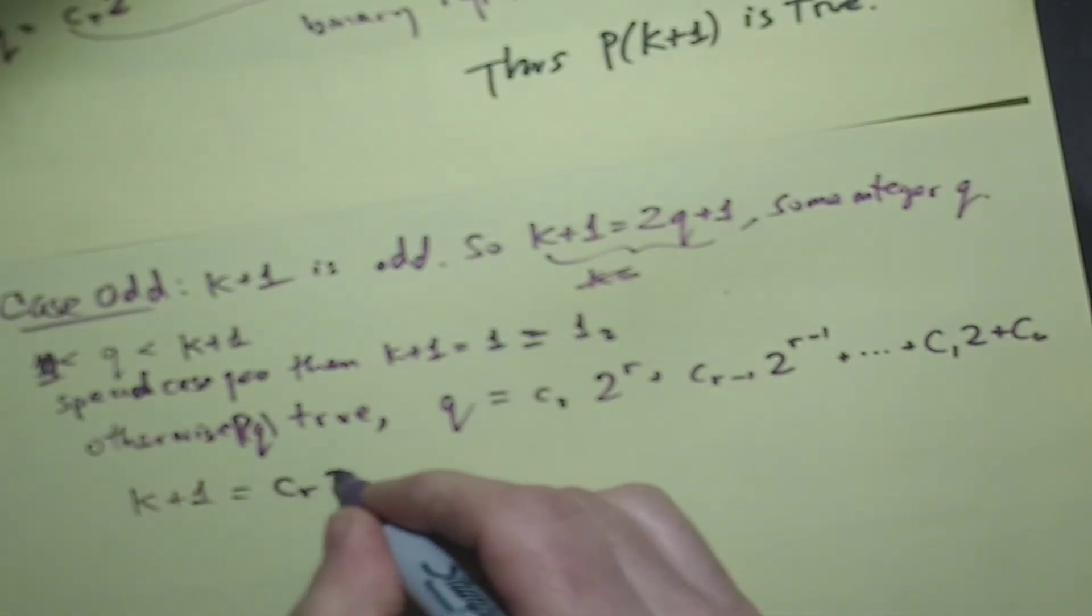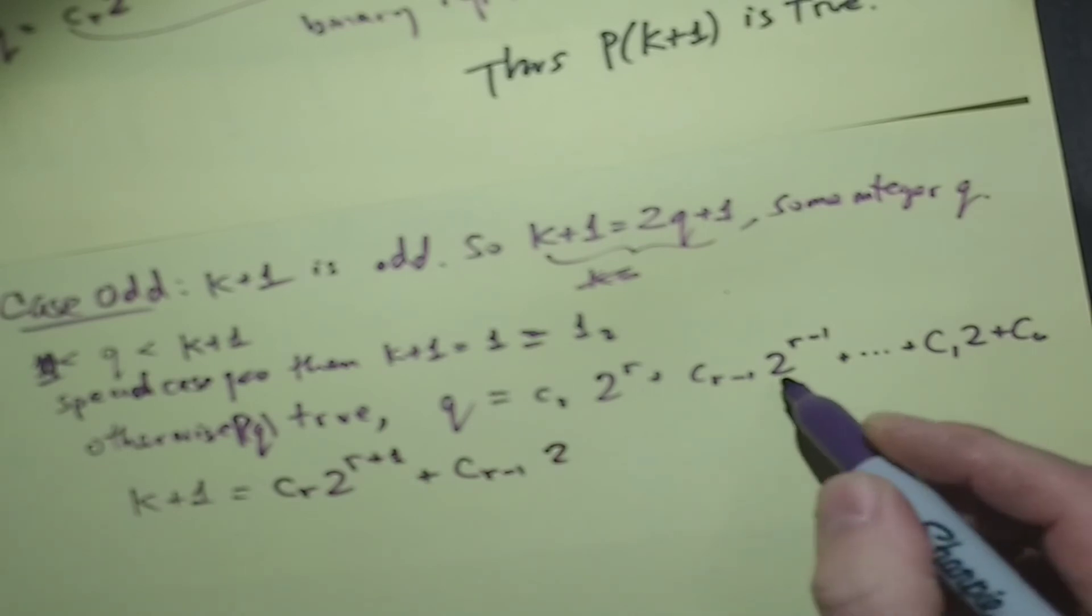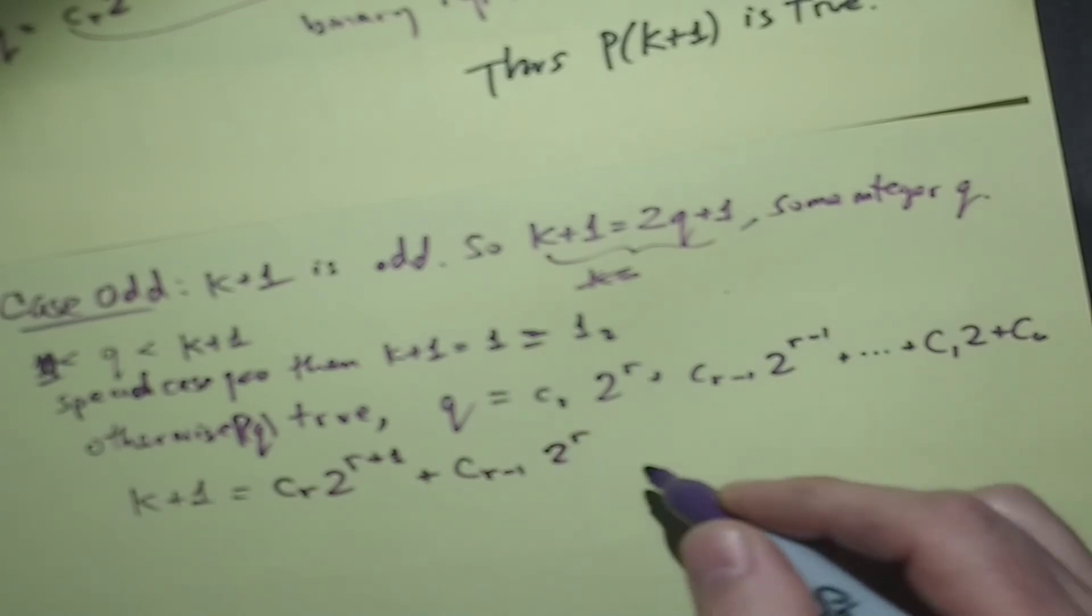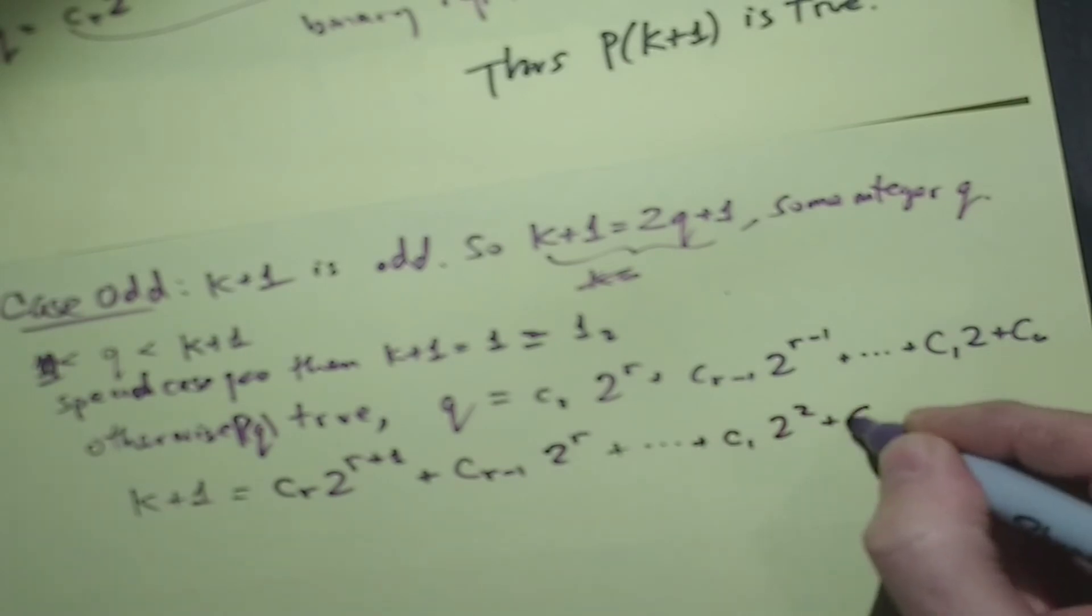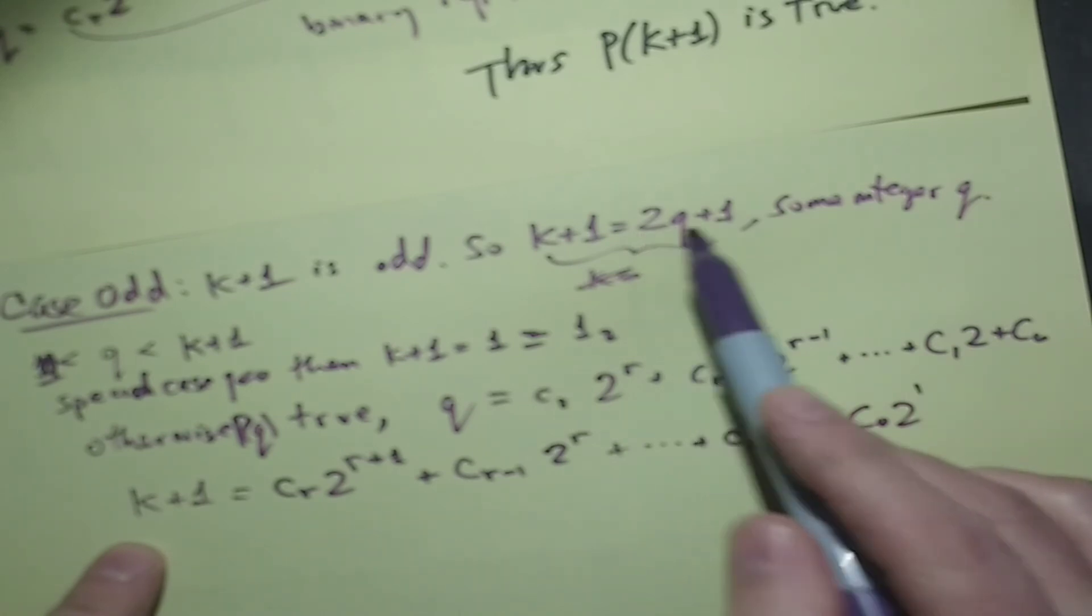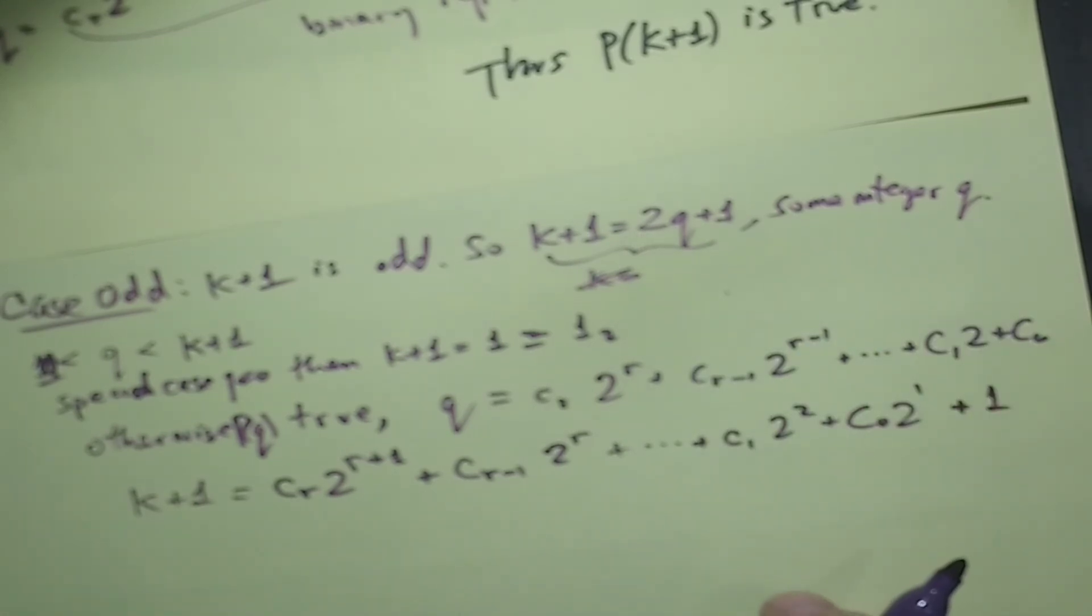So it's going to be cr times 2 to the r+1, plus cr minus 1 times 2 to the r minus 1 times 2, which is 2 to the r, and then we keep multiplying these, shifting them over. And we get to c1, 2 squared, plus c0 times 2 to the 1, and we've multiplied q by 2 and now we have to add 1, we'll just add it there. And this is a binary representation of k+1. So P(k+1) is true.